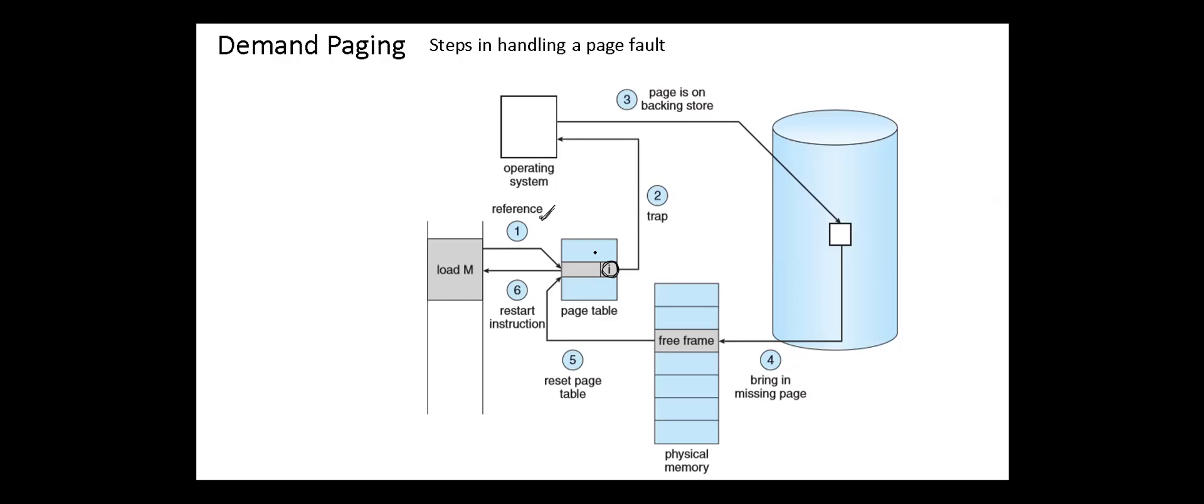On the other hand, if a page is needed that was not originally loaded up, then a page fault trap is generated, which must be handled in a series of steps. First, from a free frame list, a free frame is located. Next, a disk operation is scheduled to bring in the necessary page from the backing store. This operation usually will block the process on an I/O wait, allowing some other processes to use the CPU in the meantime.